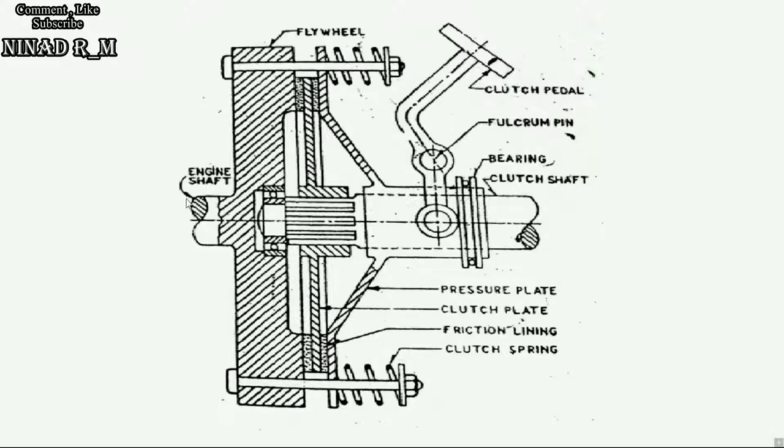Power comes here to the flywheel. The flywheel gives power to the clutch plate with the help of these two friction plates and with the help of these friction linings. So power from the flywheel goes to the clutch plate and through the clutch plate with the help of these splines, power goes to the clutch shaft.